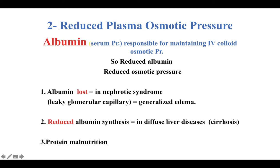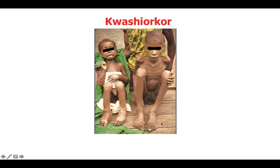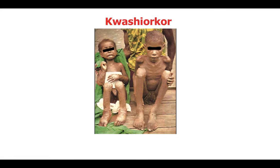Albumin synthesis may also be reduced in diffuse liver cirrhosis. Additionally, albumin may be reduced due to protein malnutrition — decreased intake of protein. As seen in the image showing leg edema, malnutrition causes decreased osmotic pressure of the blood, leading to leakage of fluid into the interstitial tissue.